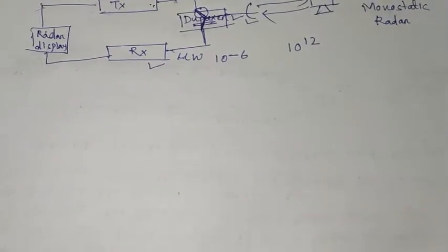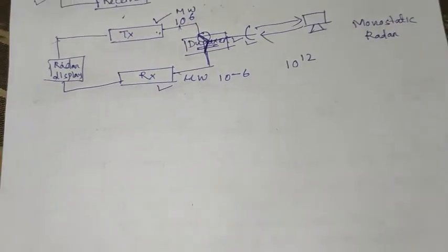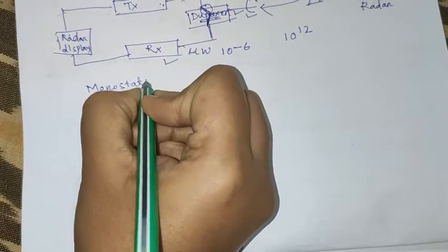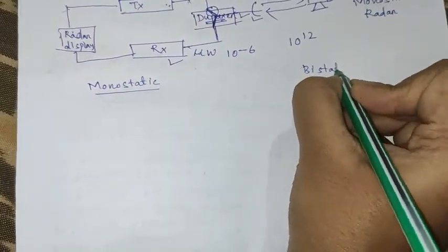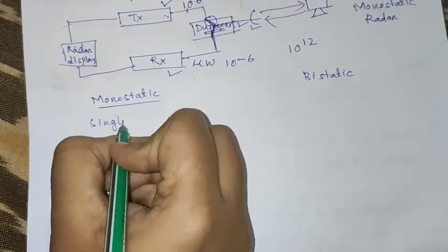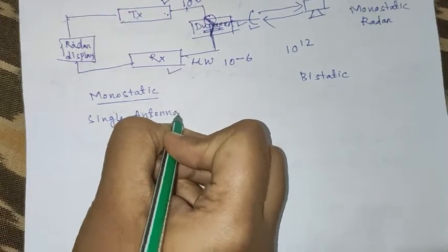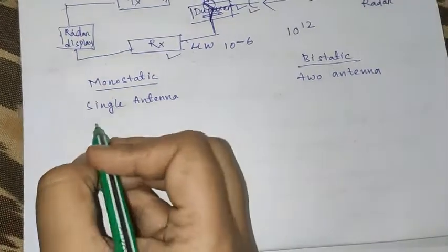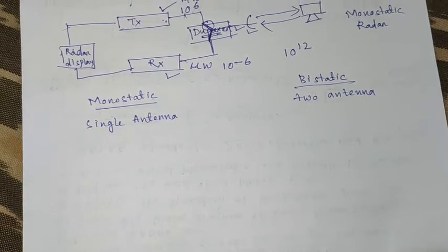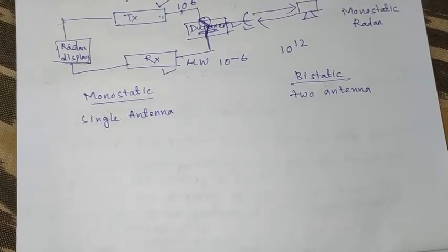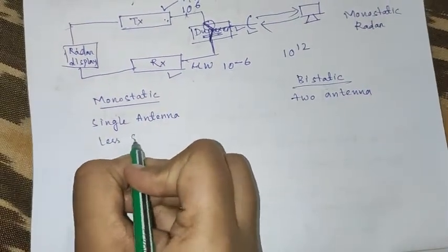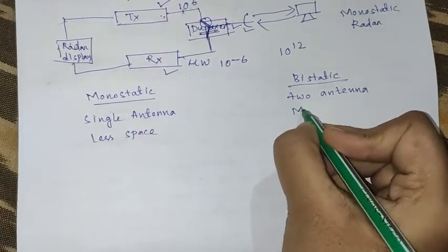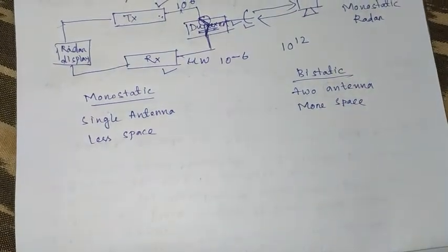The common differences between monostatic and bistatic: monostatic uses a single antenna, which means the space requirement is less. In bistatic, two antennas are used, so more space is required.